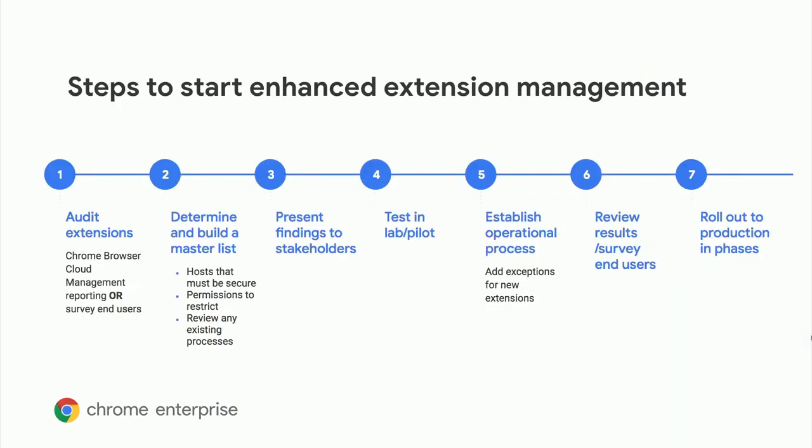If you're interested in getting started with managing extensions via permissions, here is a good outline. The first step is getting a handle on what extensions are in your environment — Chrome Browser Cloud Management is a free and easy way to get started. From that first audit, you can then create a policy based on device and site permissions that you will want to restrict, and present these findings to your stakeholders. Next, test these new policies and establish an operational process for new extensions or updates to extensions. Finally, review the results from the test and roll out the new process to production.